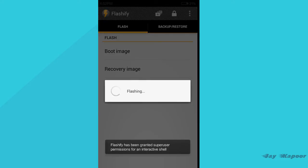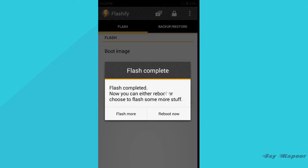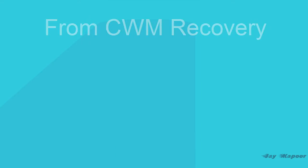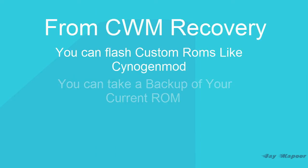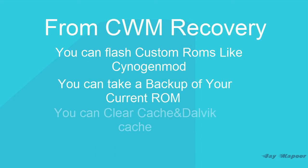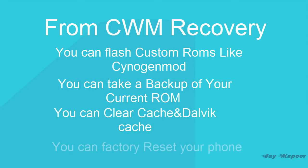It will flash the recovery for you. After it is successfully flashed, it will say Flash completed. Click on reboot now and your phone will reboot. CWM recovery is now completely installed. As soon as you click on reboot now, you will be in the CWM recovery.